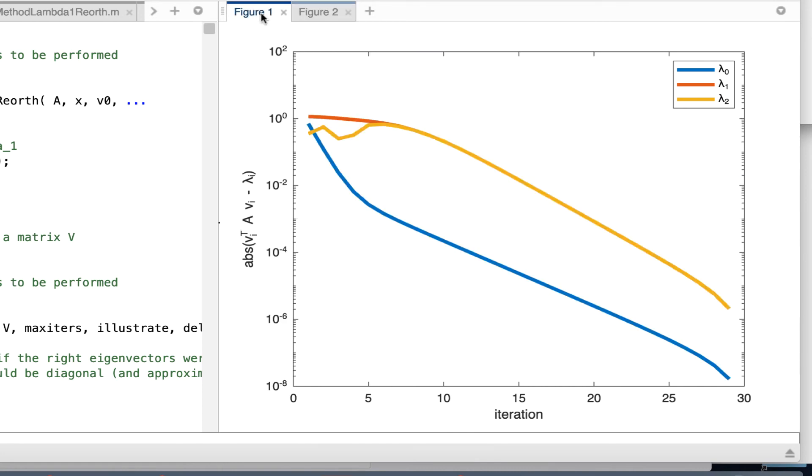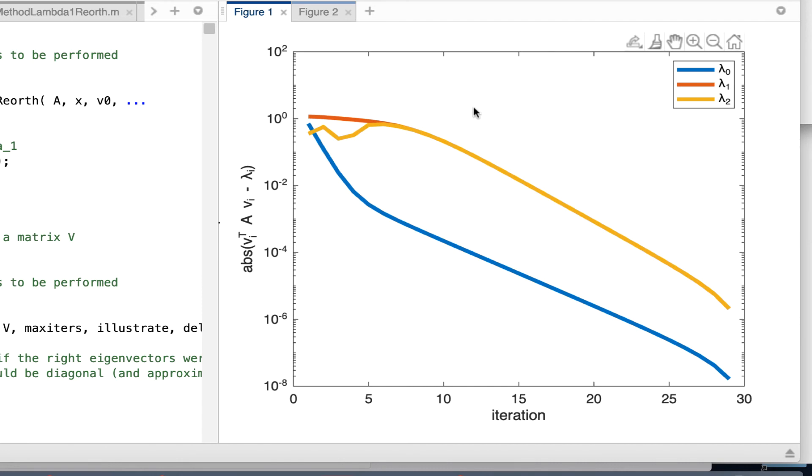And then if we look at a graph where we plot the difference between the final eigenvalue that's computed and the current iteration, then we see that the convergence to the first eigenvalue is faster than the convergence to the second and third eigenvalue. Anyway, that's subspace iteration.